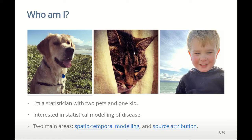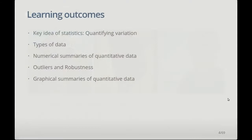These are my pets. This is Minnie the dog, Chilly the cat, and Sam the kid, who obviously isn't a pet. If you want, you can click on Minnie to find some more photos on her Instagram. The key things we're going to be learning today are: the key idea of statistics, which is quantifying variation, and then we'll start looking at different types of data that we might get.